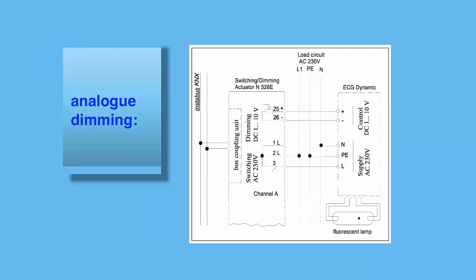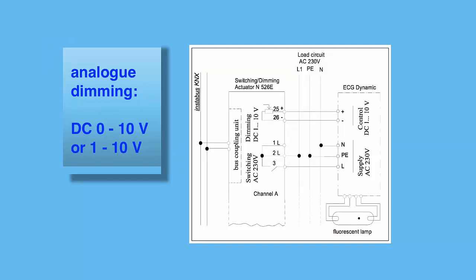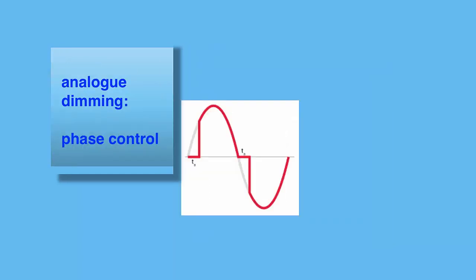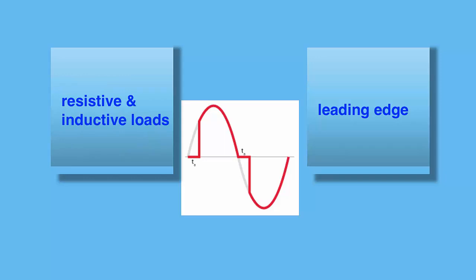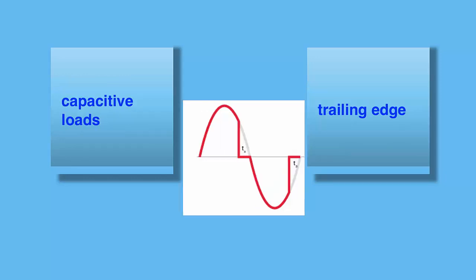Analog dimming is either based on a DC control voltage for the ballast ranging between 0 and 10 volts — active or passive, in this case 1 to 10 volt — or a phase control of mains power, which can be either leading edge (inductive and resistive loads, magnetic transformers and incandescent bulbs) or trailing edge (electronic transformers, capacitive loads).